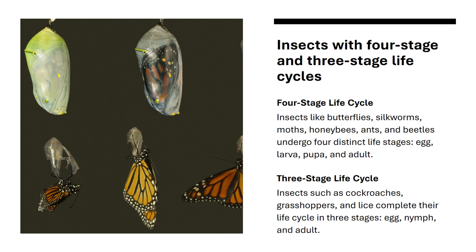The four stages are: egg, larva, pupa, and adult. Others such as cockroaches, grasshoppers, and lice have three stages: egg, nymph, and adult.